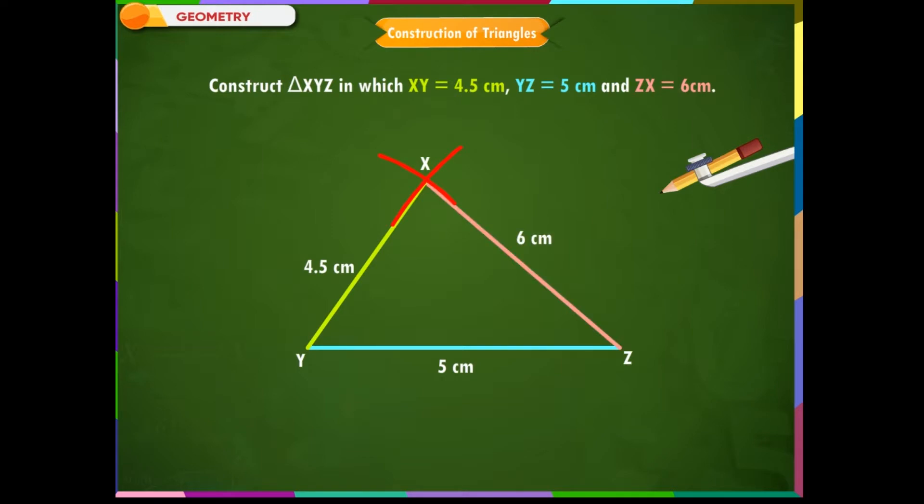Triangle XYZ is the required triangle as shown in the figure. Construction of triangle when lengths of any two sides and the measure of the included angle.